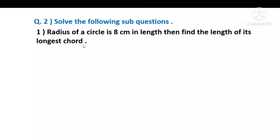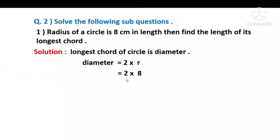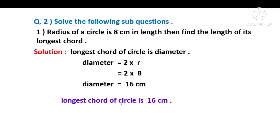The longest chord of a circle is the diameter, and the diameter is twice the radius. Solution: the longest chord is the diameter. Diameter = 2 × r = 2 × 8 = 16. Therefore, the diameter is equal to 16 cm. The longest chord of the circle is 16 cm.